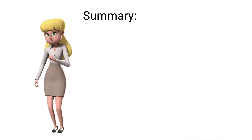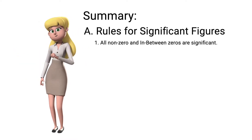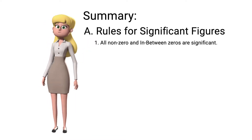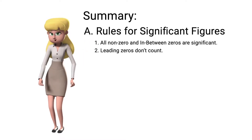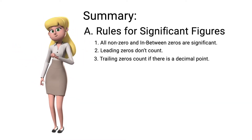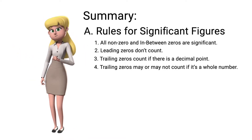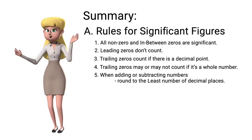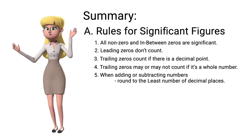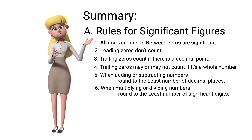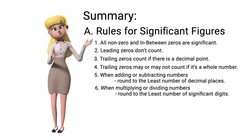Wrapping up — in reporting measurements, we must consider the rules for significant figures. Rule 1: all non-zero and in-between zeros are significant. Rule 2: leading zeros don't count. Rule 3: trailing zeros count if there is a decimal point. Rule 4: trailing zeros may or may not count if it is a whole number. Rule 5: when adding or subtracting numbers, round your final answer to the least number of decimal places. Rule 6: when multiplying or dividing numbers, round your final answer to the least number of significant digits.